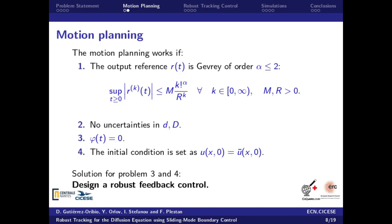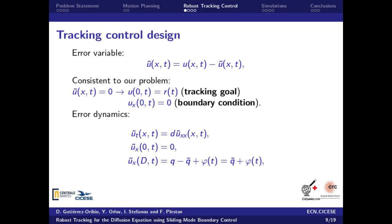Therefore, in order to robustify the open-loop motion planning, a robust feedback control is required. For this purpose, an error variable is introduced, which is consistent with our tracking goal and with the boundary condition at x equal to 0.